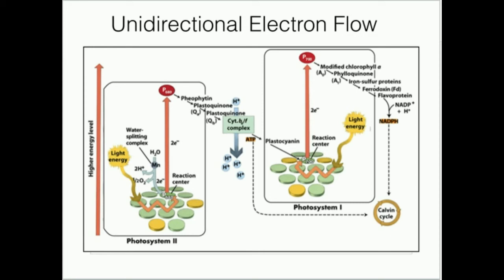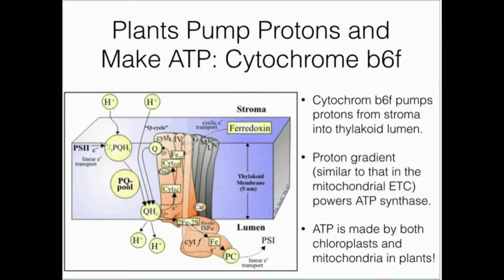P680 transfers electrons one at a time to pheophytin, and then it transfers electrons to plastoquinone A and plastoquinone B. Some of these electron transfers involve two electrons — for example, plastoquinone A transfers two electrons to plastoquinone B, and plastoquinone B also transfers two electrons. It's not really so important to understand the exact mechanism, but the cytochrome B6F complex is going to be very critical, and now we're going to talk about it.